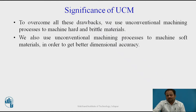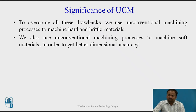To overcome all these drawbacks, we use unconventional machining processes to machine hard and brittle materials. We also use them to machine soft materials to get better dimensional accuracy. Unconventional machines are expensive, but they provide better surface finish and harder materials can be easily machined. In conventional machining of harder materials, more force is required and the tool may break, which is again expensive. Therefore, unconventional machining processes overcome all those difficulties.